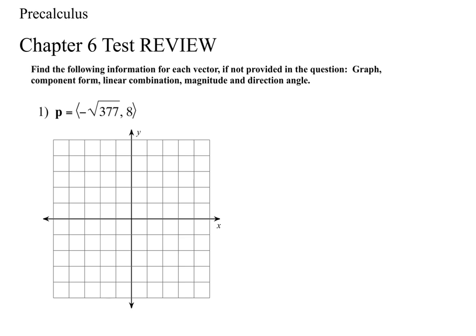Whatever they gave you, you don't need to recalculate. In this case, they gave component form, so component form is already done — that's your XY. If they gave you magnitude and direction, you'd have to calculate component form. If they gave you a unit vector with I and J, you'd pull the coefficients as your component form.